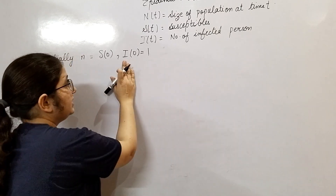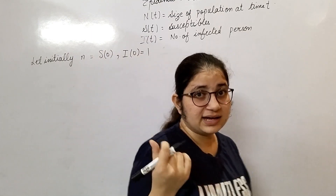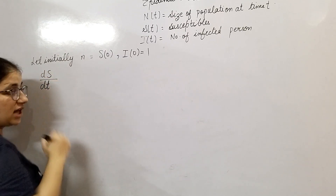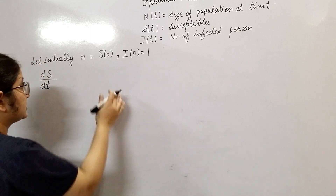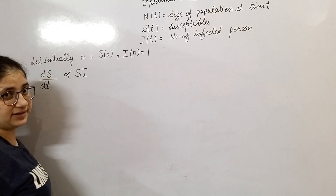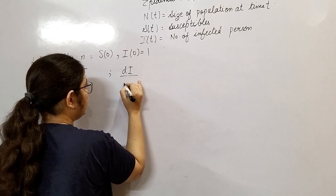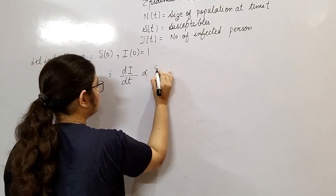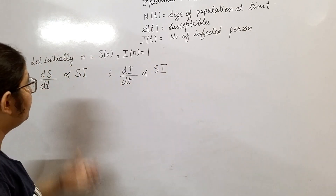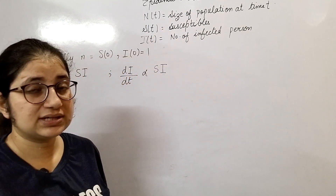Initially we assume susceptibles are n and infected are 1. Now the rate of change of susceptibles at time t is proportional to susceptibles times infected (S·I). Similarly the rate of change of infected persons is also proportional to S·I.